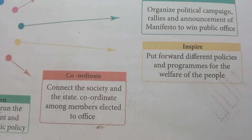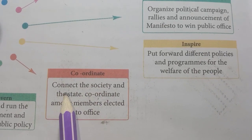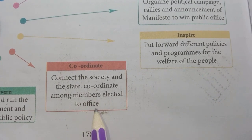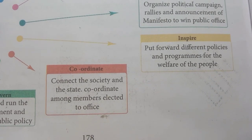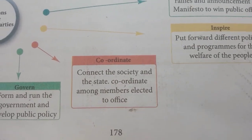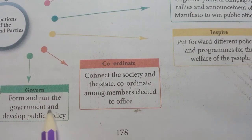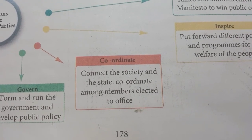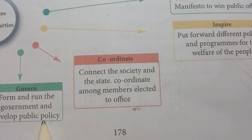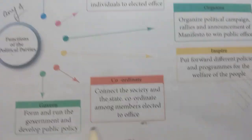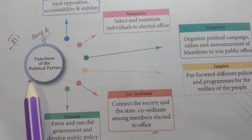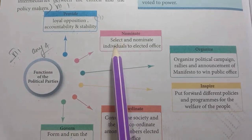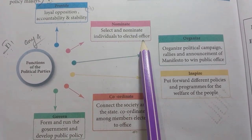Fifth: put forward different policies and programs for the welfare of the people. Sixth: connect the society and the state, coordinate among the members elected to office, form and run the government, and develop public policy. These are the six functions of political parties.